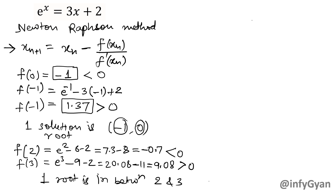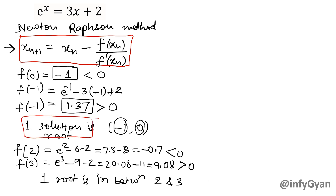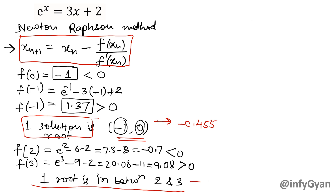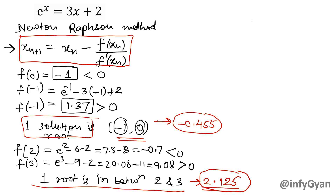Applying the Newton-Raphson general formula, every value can be found. For the root between minus 1 and 0, that value will come out to be minus 0.455. And for the root between 2 and 3, that value will come out to be 2.125. So the root between 2 and 3 is at 2.125, and the root between negative 1 and 0 is at minus 0.455.